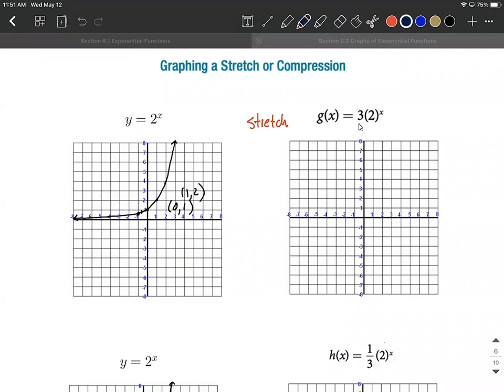To get these additional key points, since all our y-values are represented by 2^x, each of these y-values gets multiplied by 3.